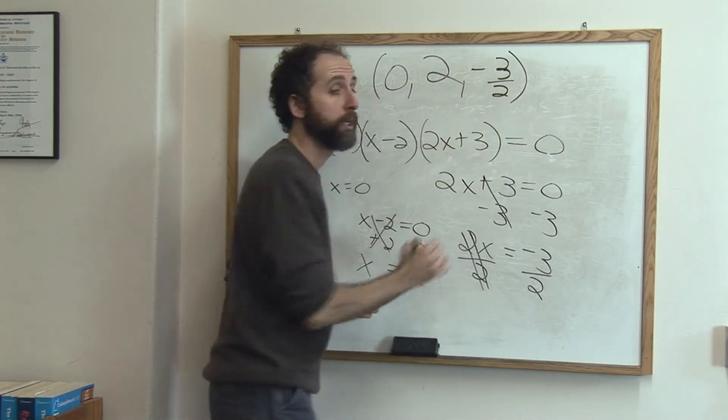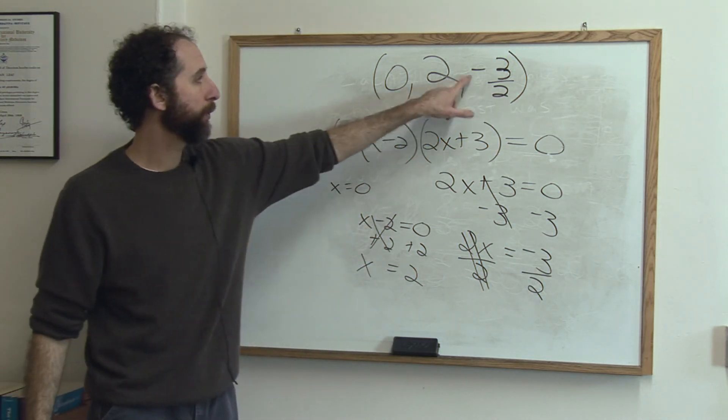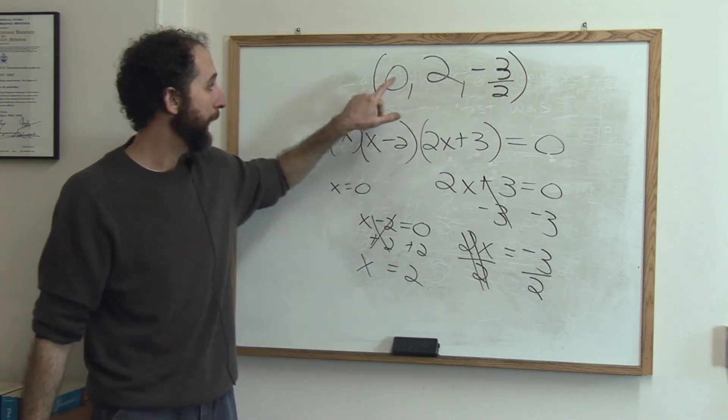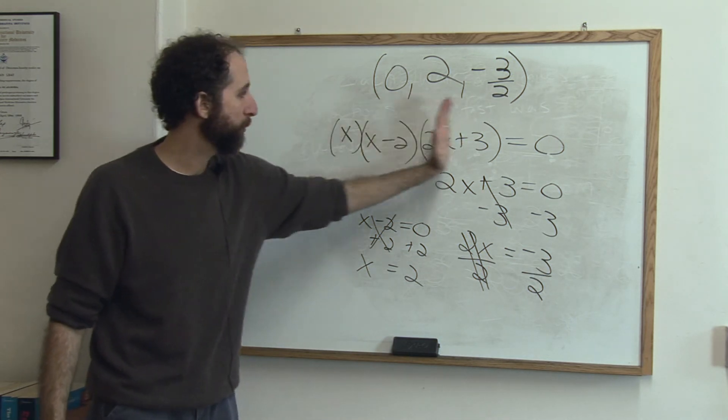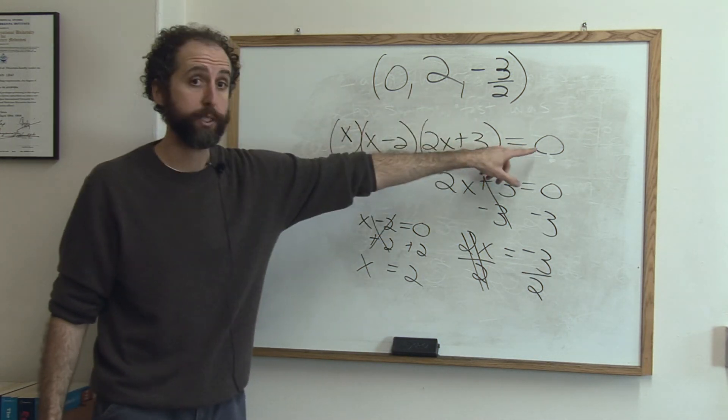Negative three halves. So we have three answers, zero, two, or negative three halves. What that means is any one of these plugged in for x will ultimately give a result. When you multiply, you'll get zero.